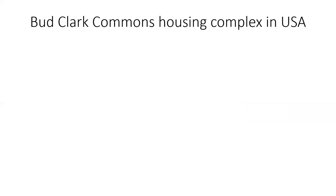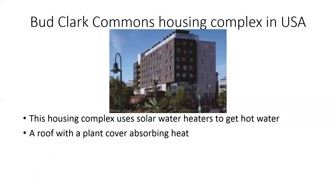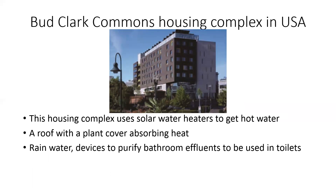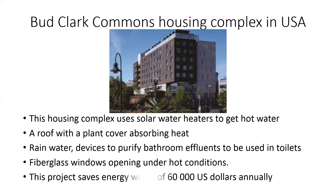The Bud Clark Commons housing complex in USA uses solar water heaters to get hot water, a roof with plant cover for absorbing heat, rainwater collection, devices to purify bathroom effluents for use in toilets, and fiberglass windows that open under hot conditions. This project saves energy worth 60,000 US dollars annually.